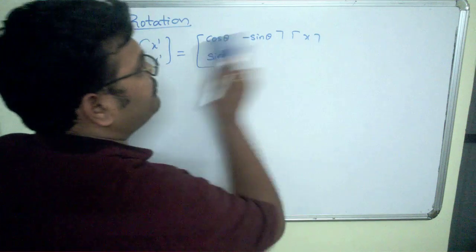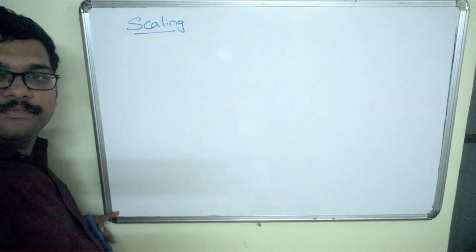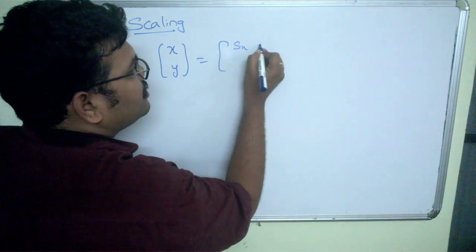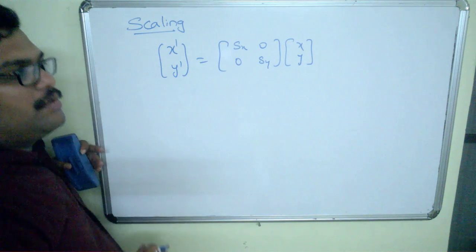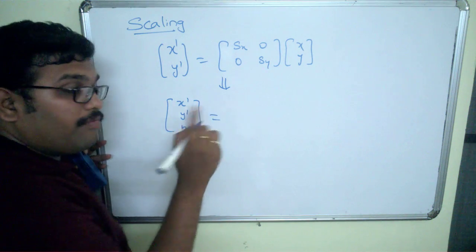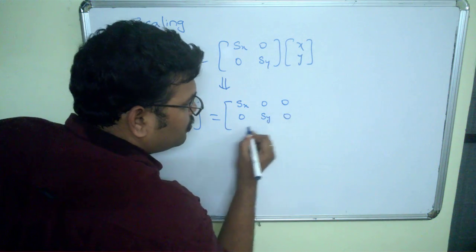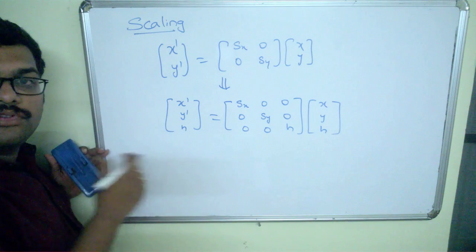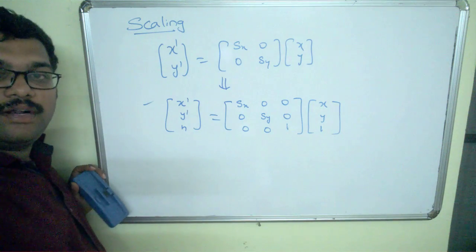For scaling, we derived [x-dash, y-dash] equals [Sx, 0; 0, Sy] times [x, y]. In homogeneous matrix representation, [x-dash, y-dash, h] equals [Sx, 0, 0; 0, Sy, 0; 0, 0, 1] times [x, y, 1], where h is considered as 1. This is the homogeneous matrix for scaling. The formula does not change.